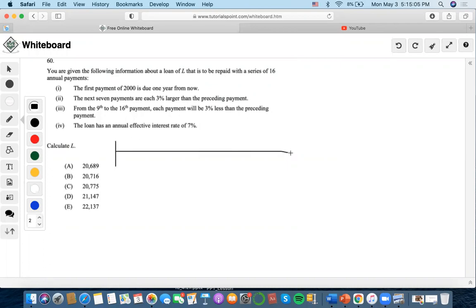So we're going to start with the timeline. The first payment of $2000 is due one year from now and the next seven payments are each three percent larger than the preceding payment. So this is the first payment and then this is going to be the next seven payments.